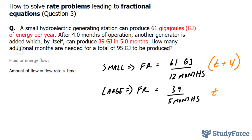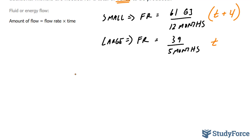They're asking how many additional months are needed for a total of 95 gigajoules. So this number right here represents the amount of flow or the total amount of flow. And therefore, what we can do is add the flow rate of this one to this, and you should end up with a total of 95. So let's write that in. 95 is the total, and that's equal to the small plus the large.